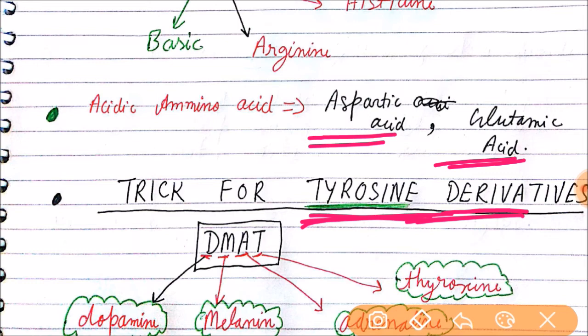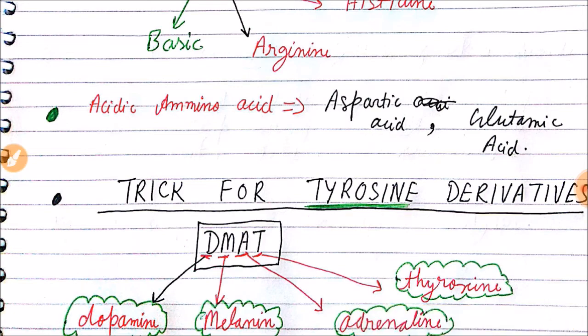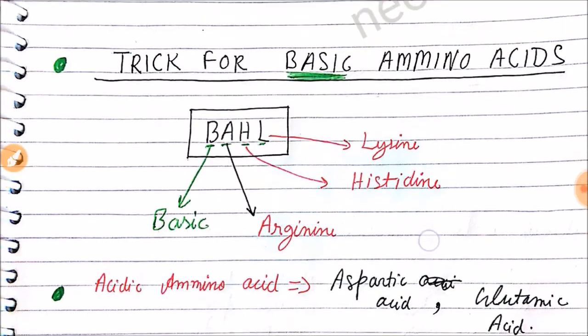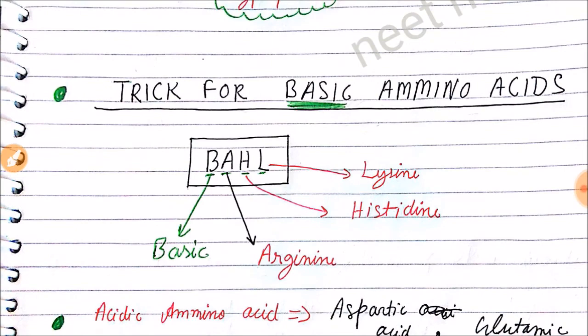Now let's see the trick for tyrosine derivatives. Our trick is 'DMAT': D for dopamine, M for melanin, A for adrenaline, and T for thyroxine.